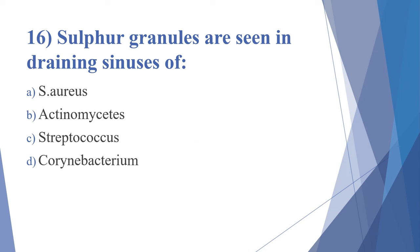Sixteenth question: sulfur granules are seen in draining sinuses of — options: Staphylococcus aureus, Actinomycetes, Streptococcus, Corynebacterium. The answer is option B, Actinomycetes. Actinomycetes produce sulfur granules, which are seen in draining sinuses.